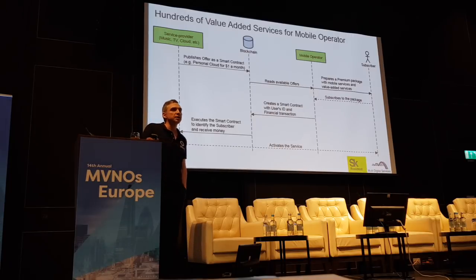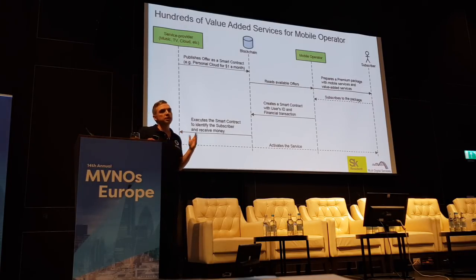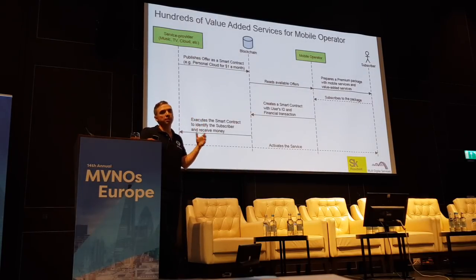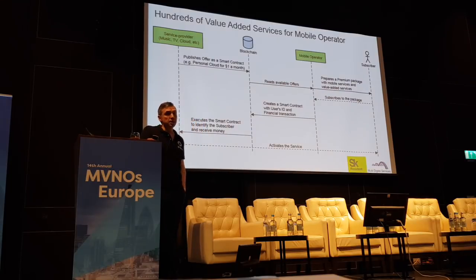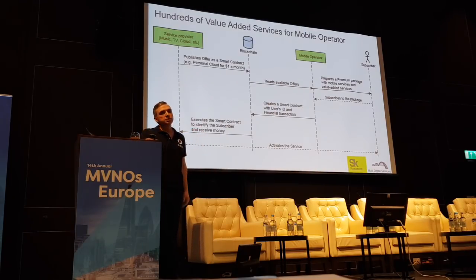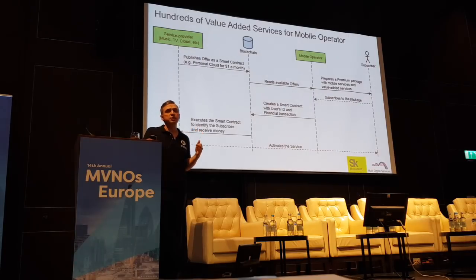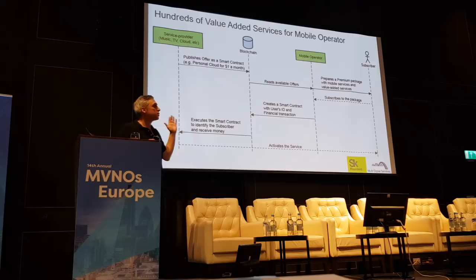One of the most interesting cases is how any mobile operator can offer many value-added services for their subscribers without any integrations or agreements with multiple service providers around the world. The principle is the same: any service provider offering music, TV, antivirus, or cloud services publishes these offers on the blockchain — for example, music for $1 per month. A mobile operator can then bundle one or several offers into a premium package for their subscribers — for example, 30 pounds per month for 10GB of traffic, music, TV, antivirus, and personal cloud. The subscriber signs up for this bundle, pays the home operator, and the home operator creates smart contracts for the service providers. In this case, there's no need for any integrations or agreements, and the operator can offer many new services and increase revenue.